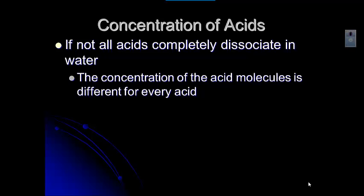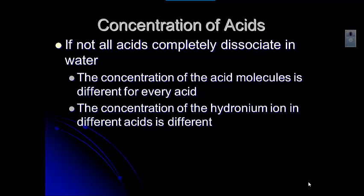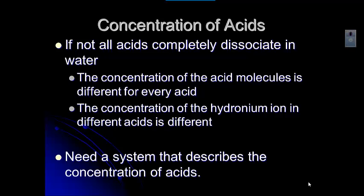So if an acid doesn't completely dissociate in water, the concentration of the acid molecule is different for every acid. And so the concentration of that hydronium ion, that H3O+, is different for every acid. So we have to have a system that tells us what the concentration of the acid is, because that is dependent on the number of ions in that particular acid. We use something called pH to describe that.